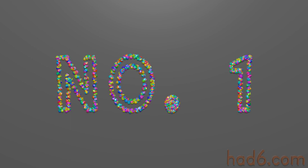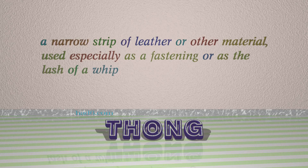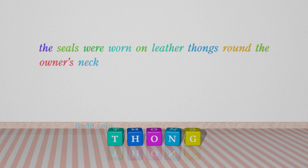Number 1: Thong. Which means a narrow strip of leather or other material, used especially as a fastening or as the lash of a whip. For example: The seals were worn on leather thongs round the owner's neck.